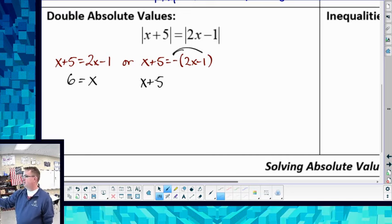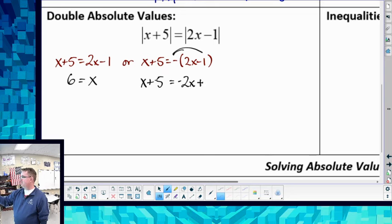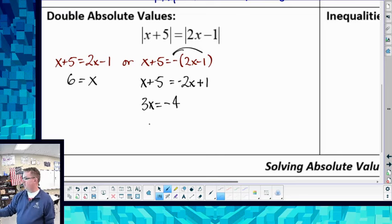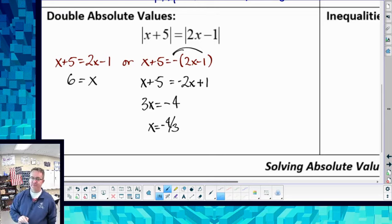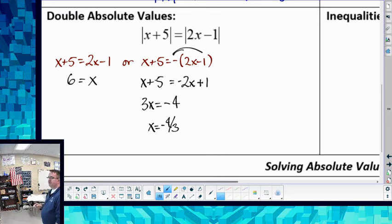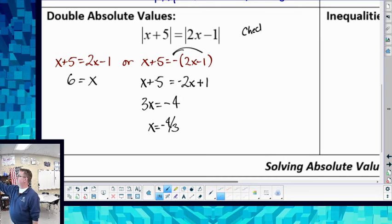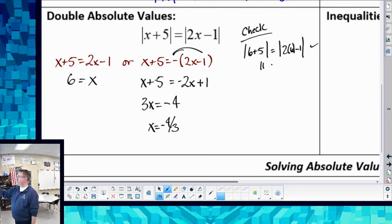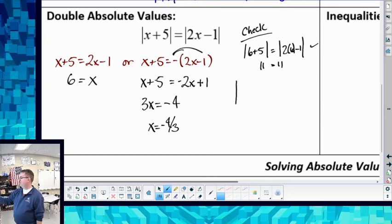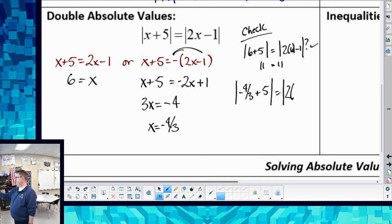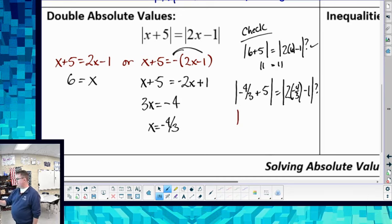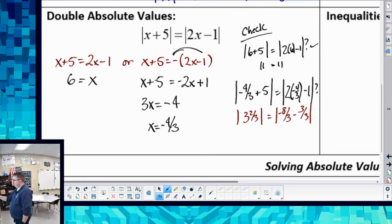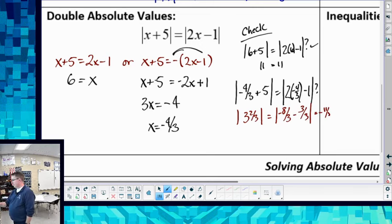On this side, rewrite this. x plus 5 is going to equal the opposite of 2x plus 1. So I'll get 3x is equal to negative 4, and x is going to equal negative 4 thirds. So then we're going to check them out over here. For the first one, 6 plus 5 is going to equal 2 times 6. On this one, I'm going to get 11 equals 11. Now for the other one, I'm going to get negative 4 thirds plus 5. Is that equal to 2 times negative 4 thirds minus 1? Here I'm going to get 5 minus 1 third, 3 and 2 thirds. This side over here, I'm going to get 8 thirds minus 3 thirds. So that's going to be negative 11 thirds, which would be 3 and 2 thirds. So in this case, this one does also work.